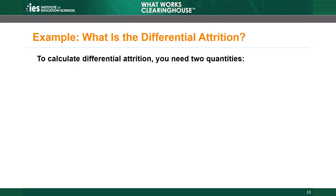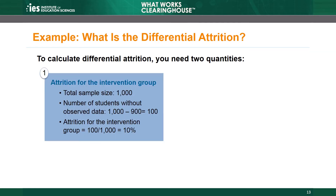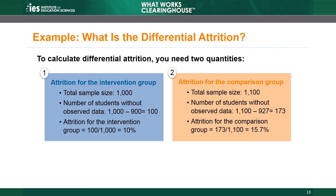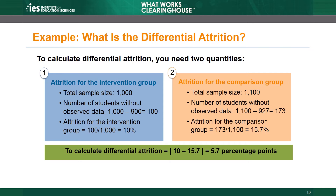The WWC takes a similar approach for differential attrition, but conducts the calculation for each group. For the intervention group, we started with 1,000 randomly assigned students. The researchers observed data for only 900 students, so they didn't observe data for 100 students out of 1,000. The attrition rate for the intervention group is 10%. For the comparison group, 173 of the 1,100 randomly assigned students lack observed data, resulting in a 15.7% attrition rate. Then, take the absolute value of the difference between the two attrition rates. We get 5.7% as our differential attrition rate.